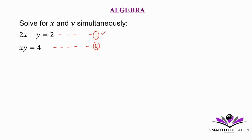So let's isolate y. It will be easier to isolate y. We can bring y to this side — transposing negative y to the right hand side and transposing positive 2 to the left hand side. So it becomes 2x minus 2 is equal to y. That's equation 3.